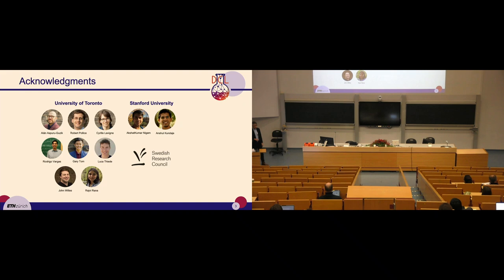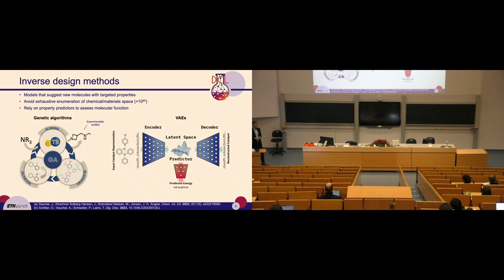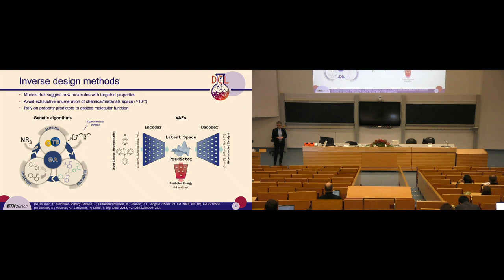We've heard today from Rocio about generative models, or what we can also call inverse design models — models which allow us to search the chemical space to find functional molecules with targeted properties. These are very useful, but usually they rely on what we can call property predictors, or what Rocio called surrogate models. I show two examples for inverse design methods for chemical reactivity or catalysis: on the left hand side we have a genetic algorithm, on the right hand side we have a more modern deep learning method called a variational autoencoder. Key to both of these approaches is something called a property predictor, which tells you how good a molecule is for a specific purpose.